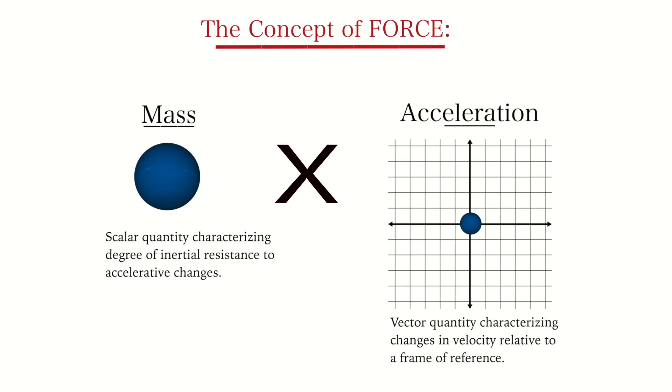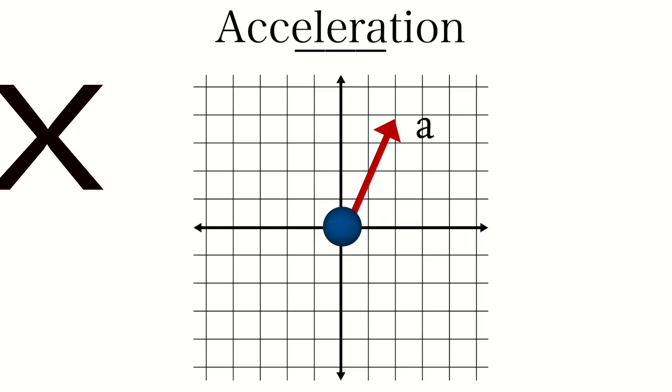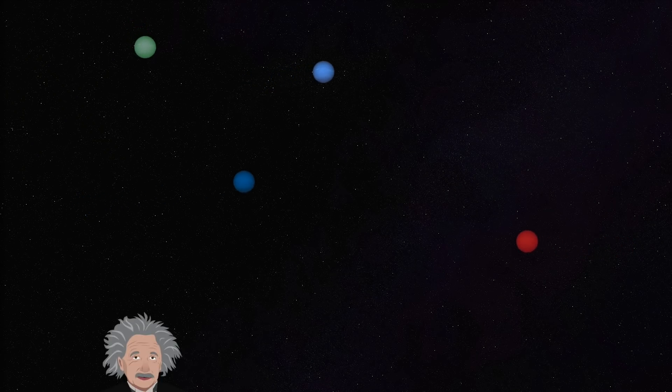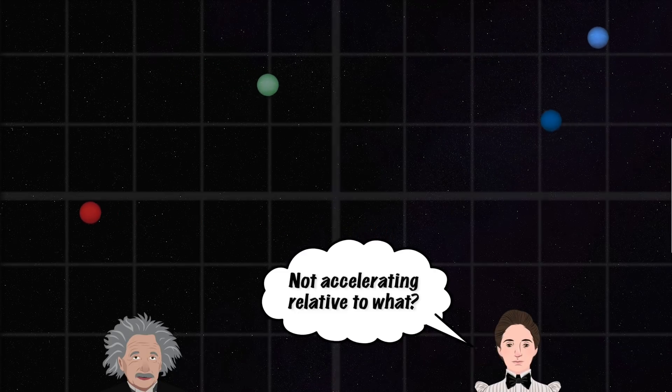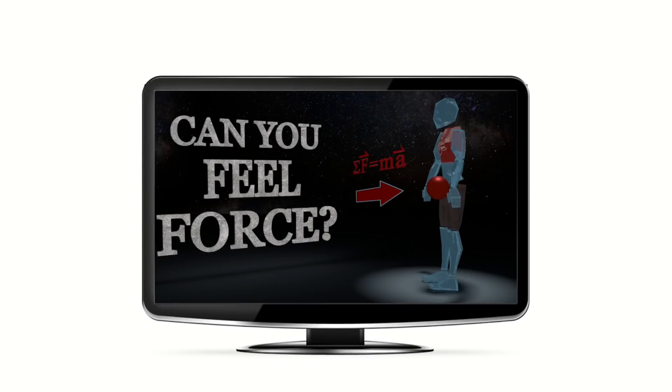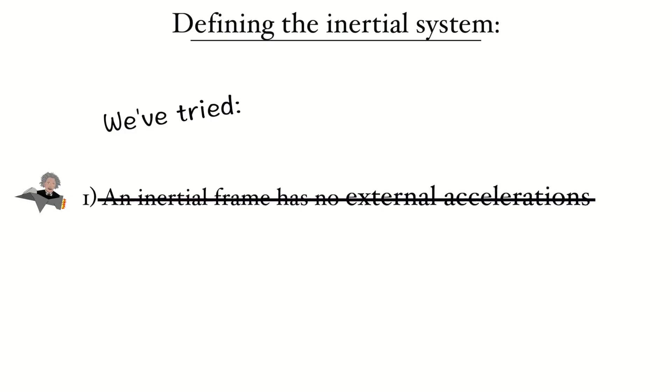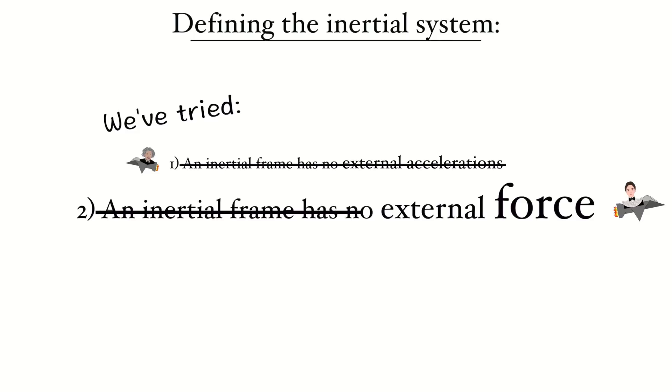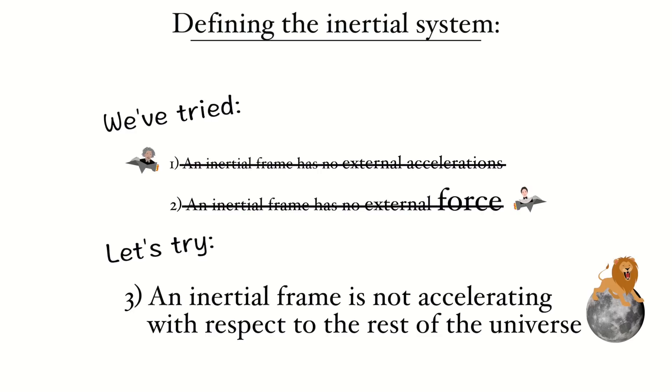But there's a problem defining inertial frames through force. That is, as we just mentioned, force is not an observable and has to be identified through acceleration. This puts it, and consequently, the concept of the inertial frame, squarely back in relative territory. To overcome this, you can, as we discussed in our prior video, Can You Feel Force?, refine the definition of the inertial frame once more. This time, not to indicate whether or not your system is experiencing external accelerations or external forces, but to indicate whether or not your system is accelerating with respect to the rest of the universe.